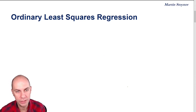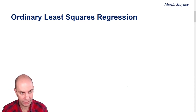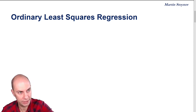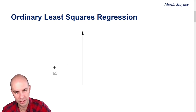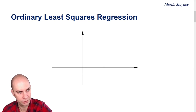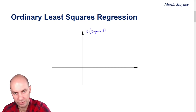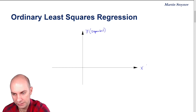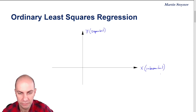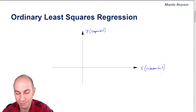We're going to be looking at ordinary least squares regressions, or OLS regression. This looks at a linear relationship between the dependent variable on the vertical axis and the independent variable on the horizontal axis. Our dependent variable is Y on the vertical axis, and on the horizontal axis we have X, our independent variable. Sometimes we refer to the dependent variable as the explained variable and the independent variable as the explanatory variable.